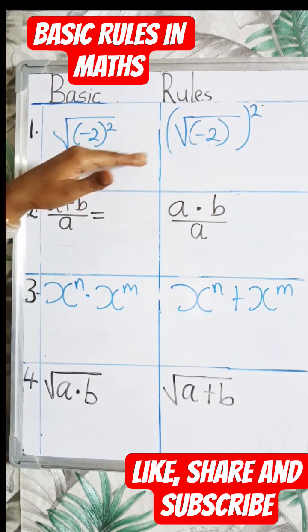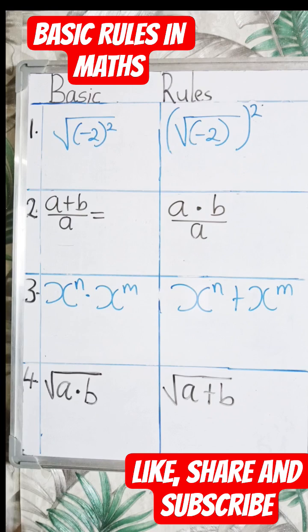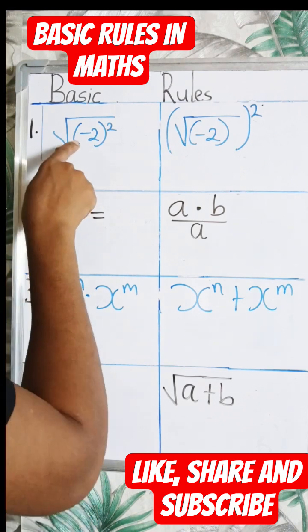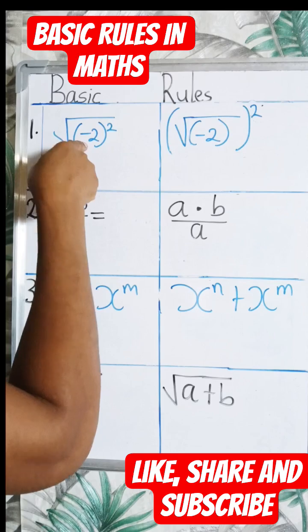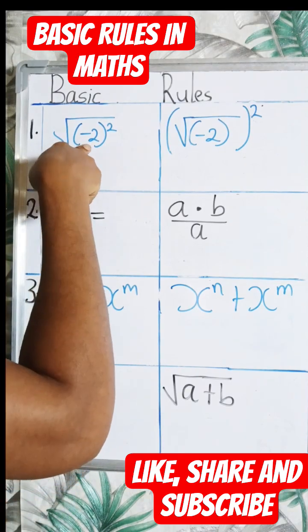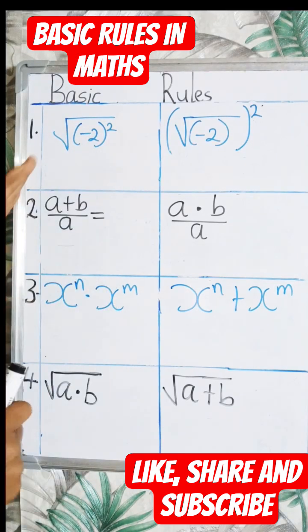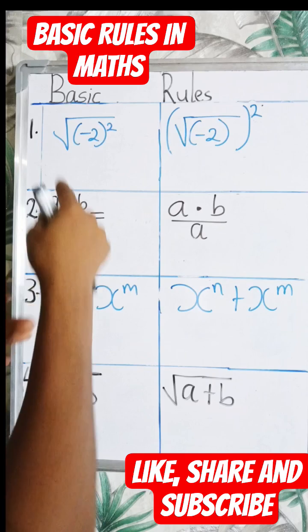You will not have the same answer because they are not the same. So here we have minus 2. This square affects the minus sign and affects the number 2, so minus times minus.